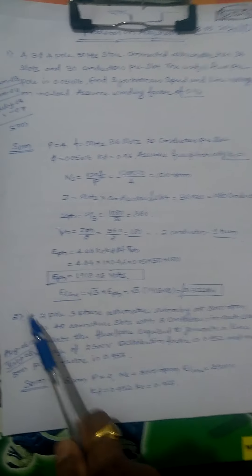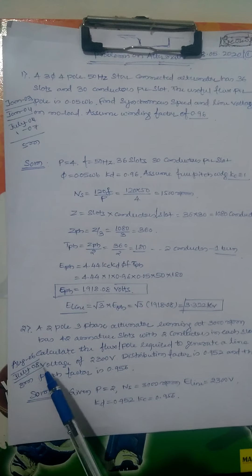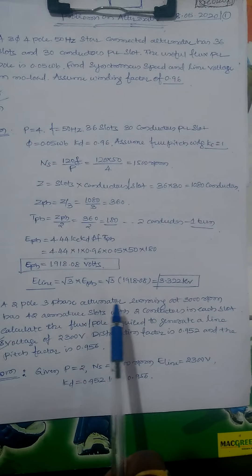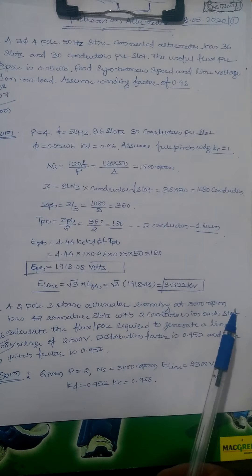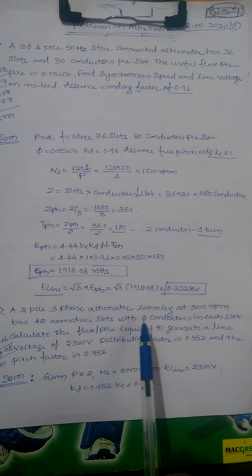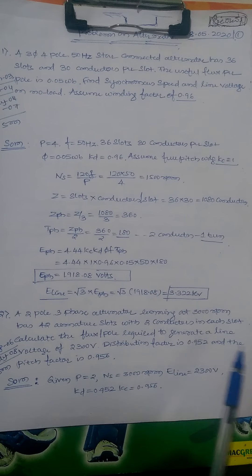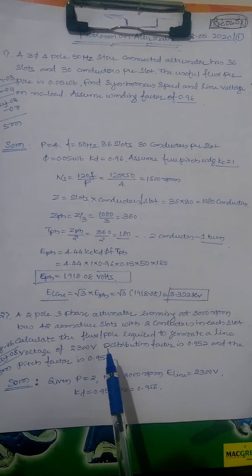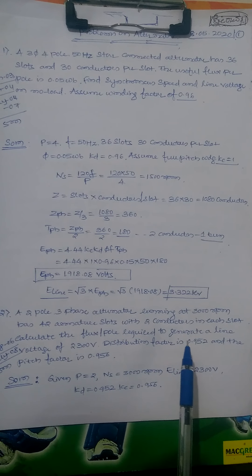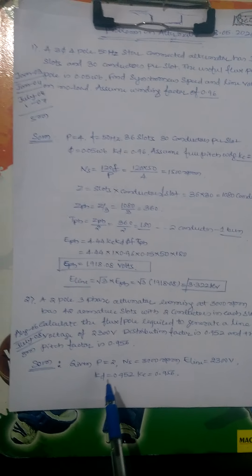The second problem is from August 2006 and July 2008. A 2-pole 3-phase alternator running at 3000 rpm has 42 armature slots with 2 conductors each slot. Calculate flux per pole required to generate line voltage of 2300 volts. Distribution factor is 0.952 and pitch factor is 0.956.